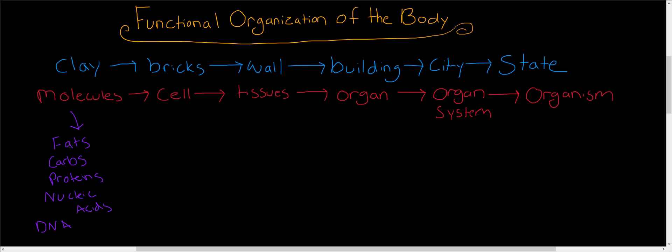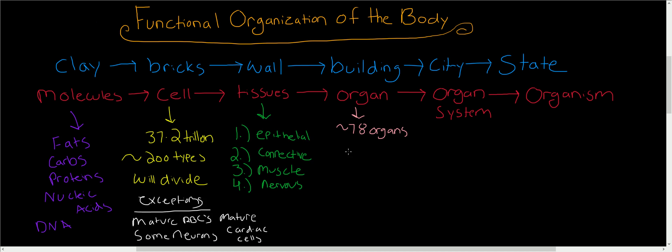And when we have these components of organelles, they function together to make a cell. And according to the Smithsonian, we have about 37.2 trillion of them and roughly about 200 types of cells in the body. And all of them will divide except for a few vital ones.